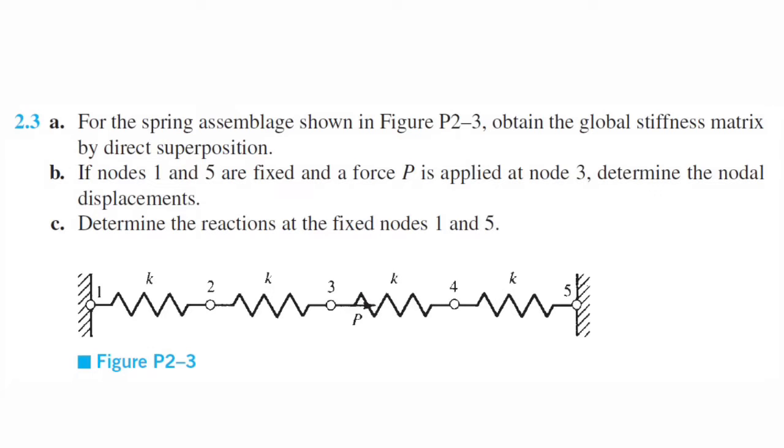Alright, we got problem 2.3. It says, for the spring assemblage shown, obtain the global stiffness matrix by direct superposition. Part B says, if nodes 1 and 5 are fixed and a force P is applied at node 3, determine the displacements of the nodes. And then part C says, determine the reactions at the fixed nodes 1 and 5. So let's go ahead and get started.